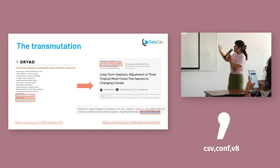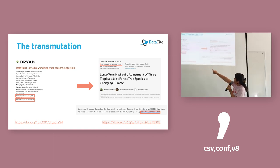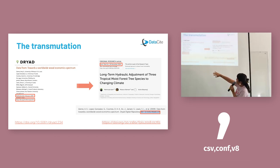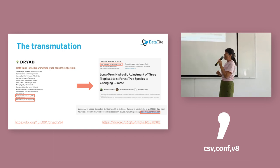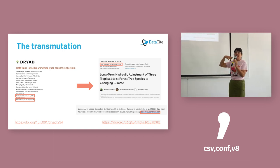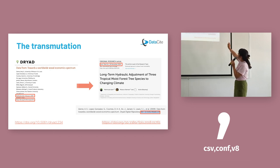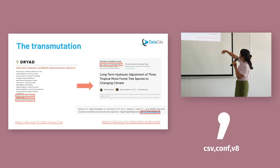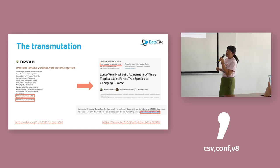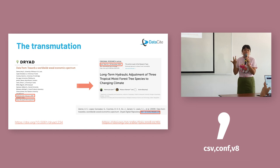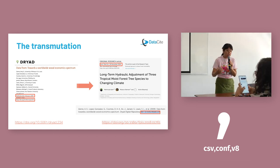This is another part of the transmutation process. This is a data set from agroforestry research. You can see the DOI — it was originally published in 2009. Because it has a DOI and metadata, it can be discovered and reused. Ten years later, in 2019, this data set was cited in a journal article from an ecology journal. So you can see the power of using DOIs and metadata to make your research data accessible and reusable.